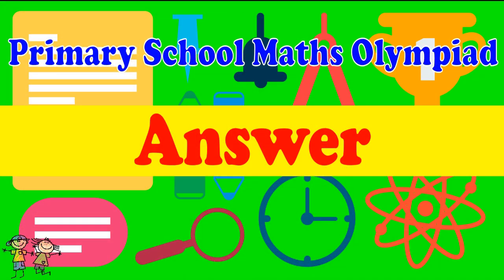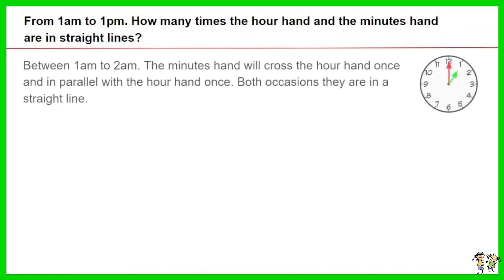Here is the recommended answer. Between 1am to 2am, the minutes hand will cross the hour hand once and in parallel with the hour hand once. Both occasions they are in a straight line.